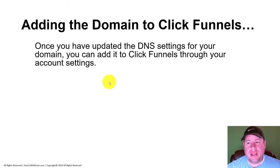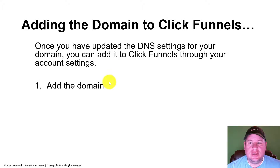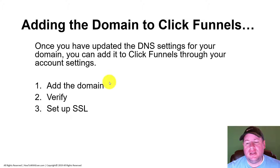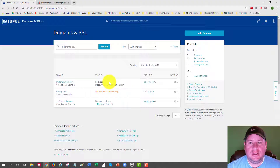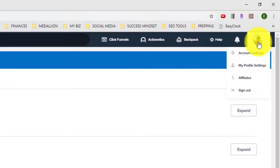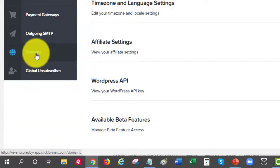Now we need to add this domain name to your ClickFunnels account. Once these settings have been changed or added, you can add the domain through your ClickFunnels account settings. We'll add the domain, verify it, and set up an SSL certificate through ClickFunnels — which is important, because you do not need to set up SSL through your domain registrar. ClickFunnels can do it for free, whereas setting it up through IONOS would cost you extra money.